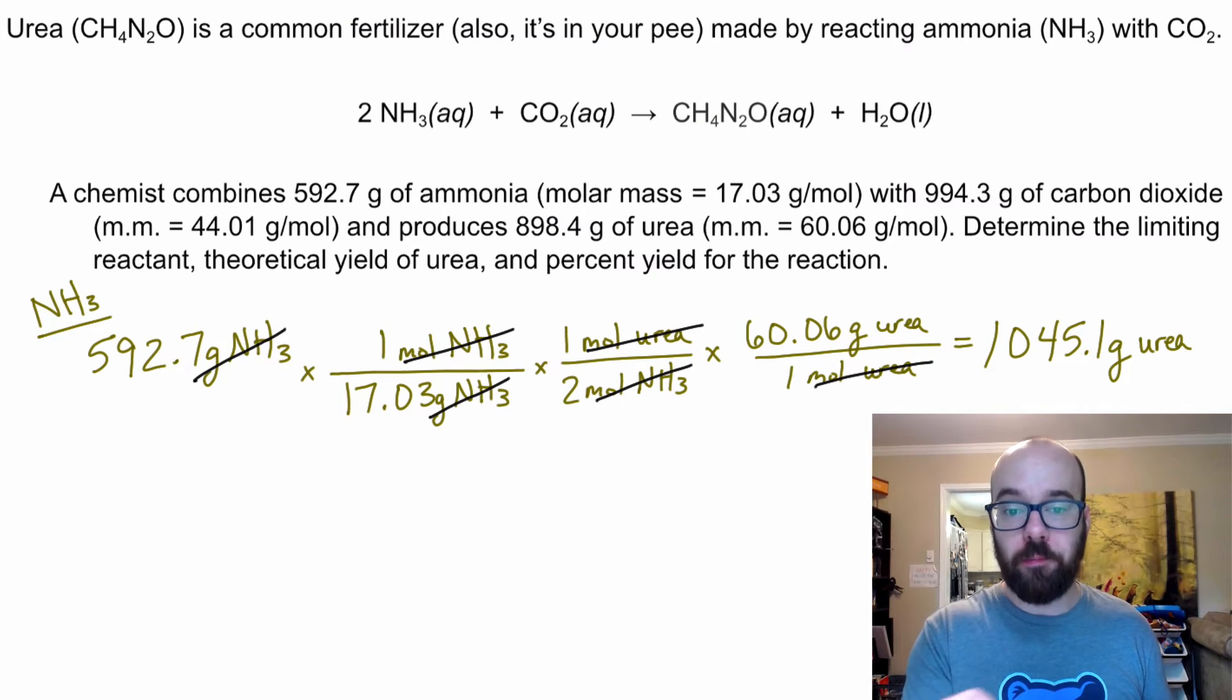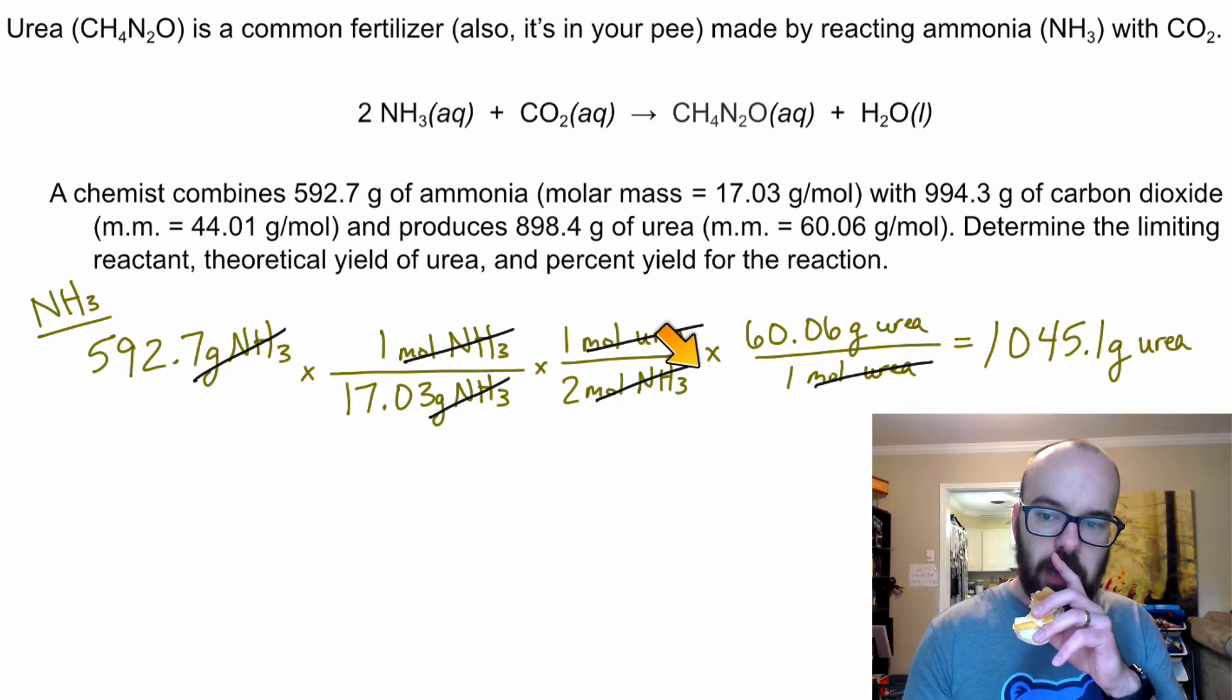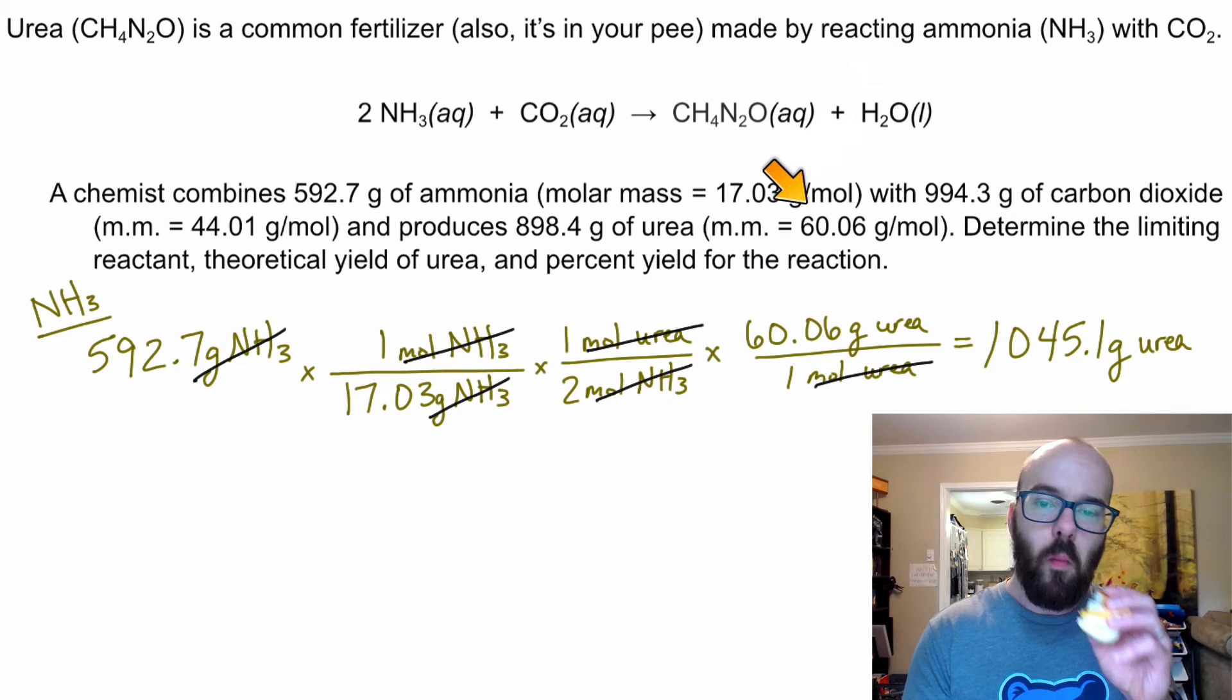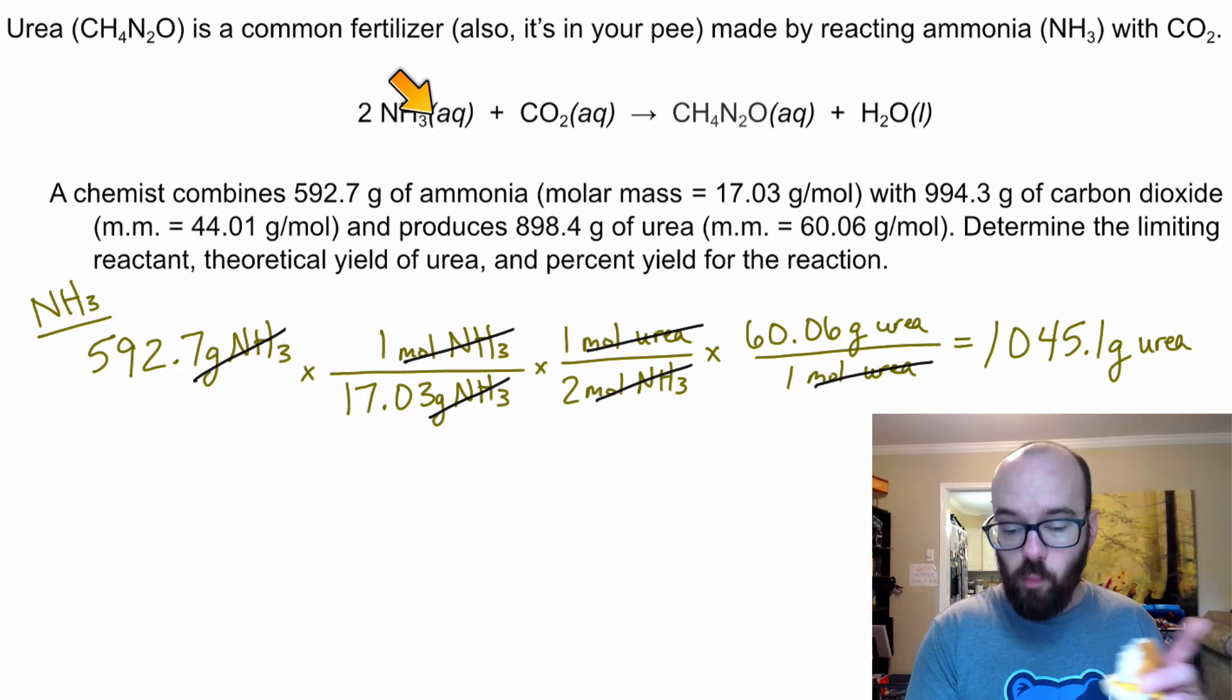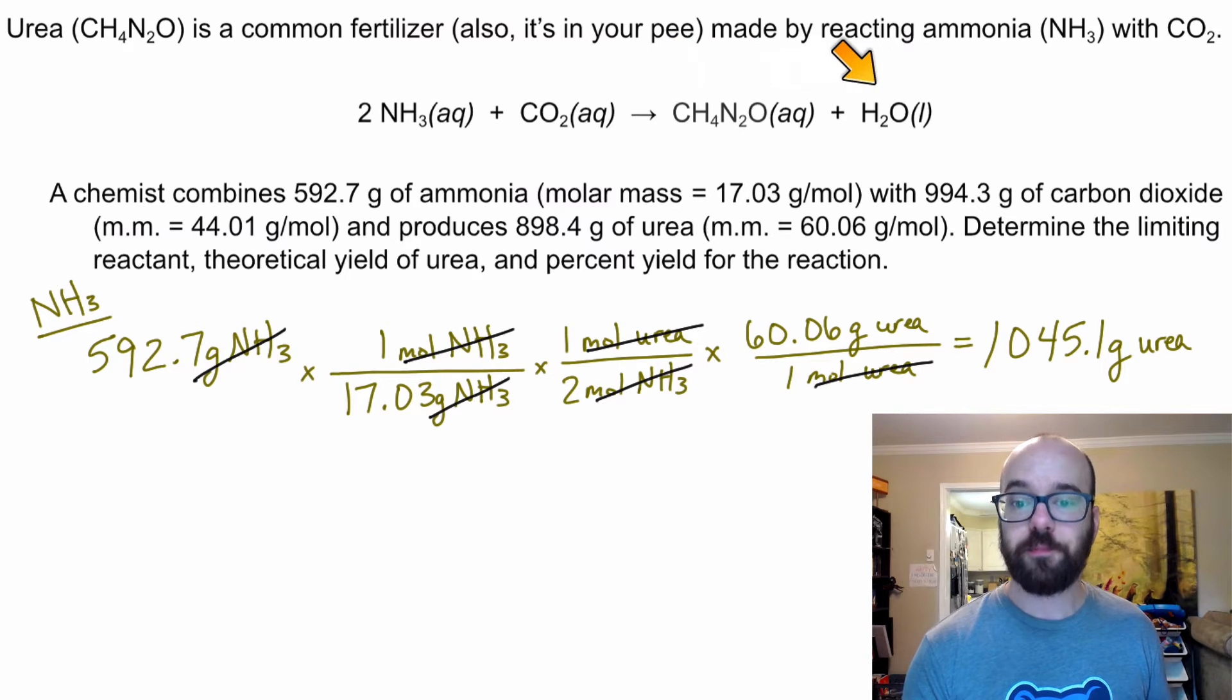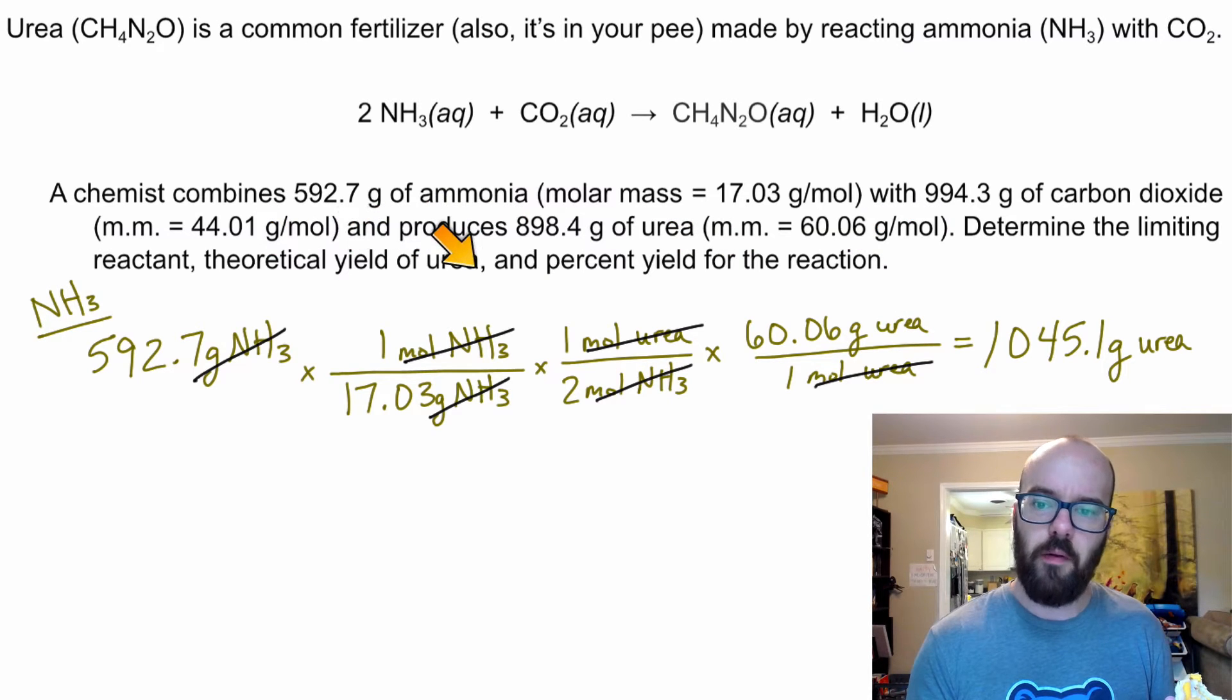Whenever you're doing a stoic problem like this, it's important that you at least go to one of the products to determine the limiting reactant. We didn't have to actually go all the way to grams of urea. We could have stopped at moles of urea. We could have even done moles of water. The main thing that's important for this is to determine one of the products. If you stick over here, you might not actually determine the correct limiting reactant because of these coefficients. So what I would suggest is always go to one of your products.